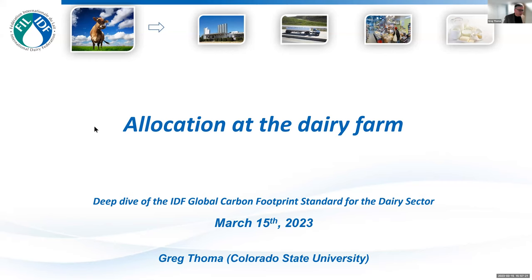Thanks everybody for the great setup. First, I should define what allocation is. This is a process — a procedure — to account for what we call in life cycle assessment multifunctionality: that is, when an activity produces more than one useful product. The dairy farm itself is a clear example, where both meat products from culled animals and milk are produced.